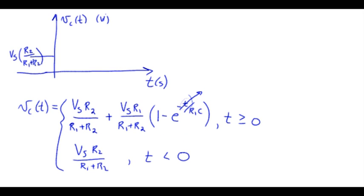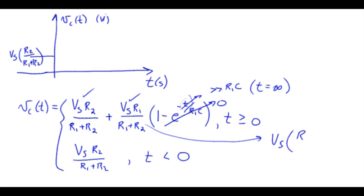Now supposing we're trying to figure out where we end up, if t goes to much greater than that time constant underneath R1C, or if you like, we could just say plug in t equals infinity. This whole piece goes to zero, leaving us with that quantity plus this quantity, which interestingly enough works out to be Vs times R2 plus R1 over R1 plus R2, and that's just one. So we end up at Vs.